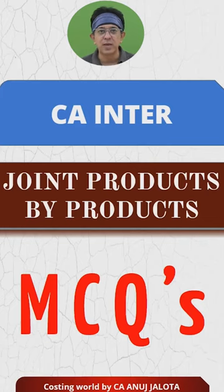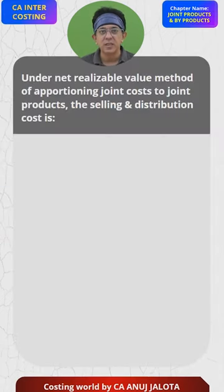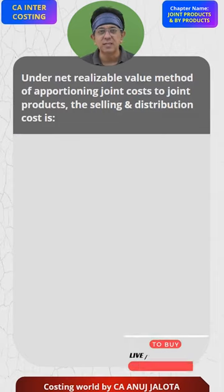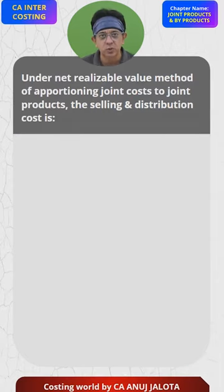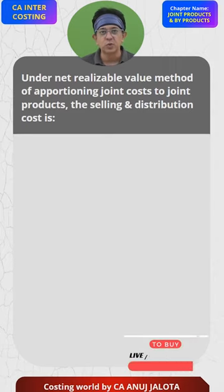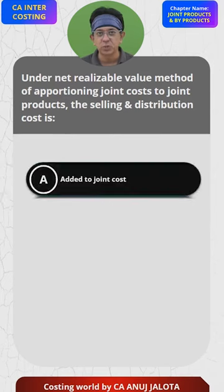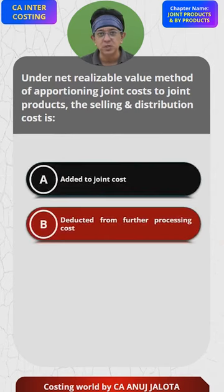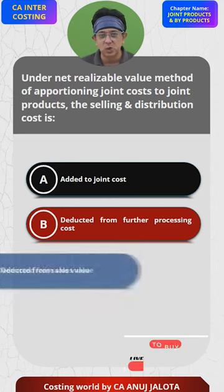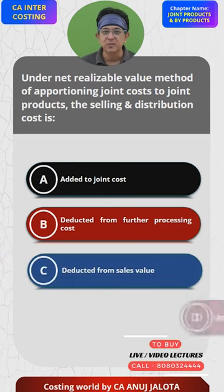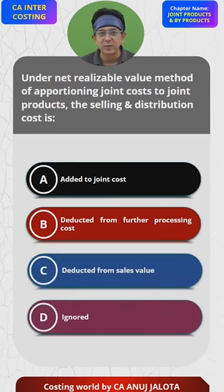CA inter joint products and by-products MCQs. Under the net realizable value method of apportioning joint cost to the joint products, the selling and distribution cost is: A) added to the joint cost, B) deducted from further processing cost, C) deducted from the sales value, and D) ignored.